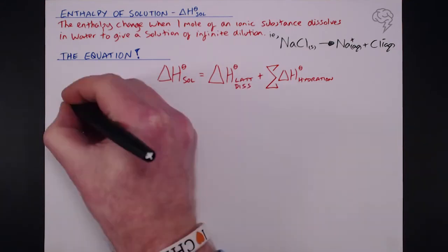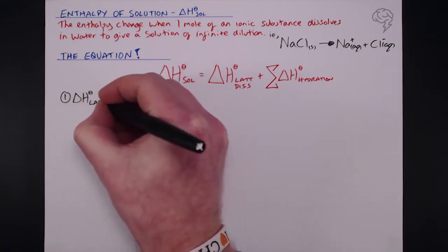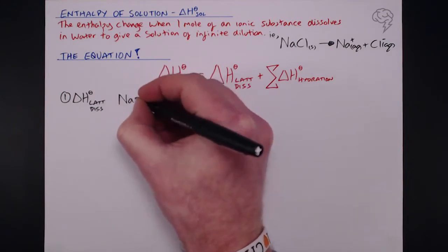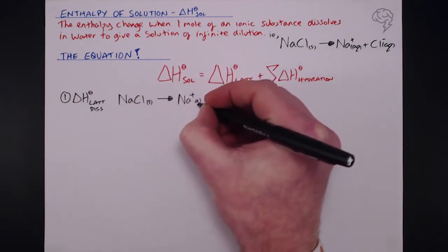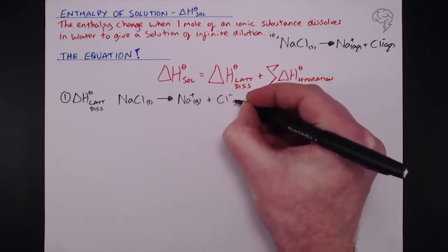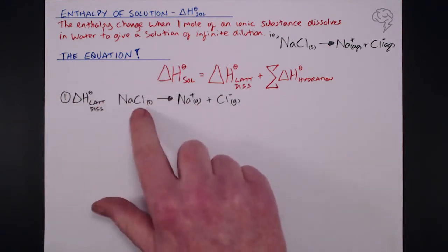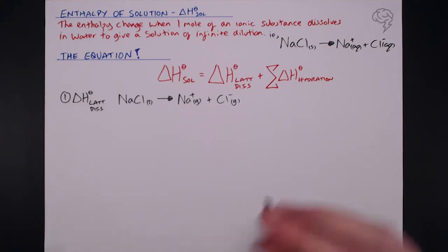So first of all, a brief reminder. So our delta H lattice dissociation, straight from our Born-Haber, we can take solid sodium chloride in this example, and turn that into gaseous ions. So that's our equation for lattice dissociation. Now just a brief reminder on this, what type of enthalpy is this? Well, it's actually an endothermic process. Why? Because we're breaking the electrostatic attractions here to actually form our gaseous ions.